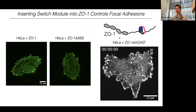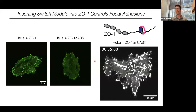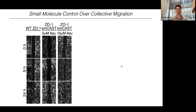We wanted to see if we could switch between these different states dynamically. We generated a version of ZO1 that removed the actin-binding site and replaced it with the small-molecule CAST switch, then expressed these in HeLa cells. Initially ZO1 is enriched at the cell periphery. Playing the video, in a very short period of time ZO1 localizes mainly to the cell periphery, then starts to co-localize very well with focal adhesions within the cell body — because we've turned on the switch within ZO1's context by adding the small molecule.